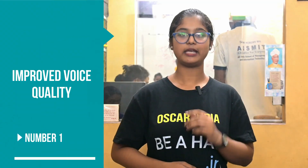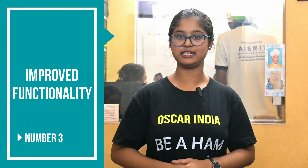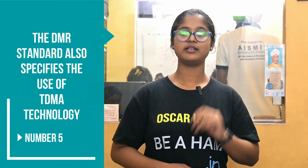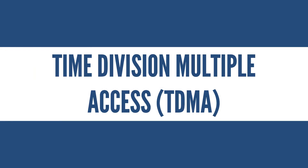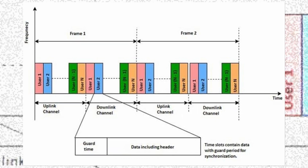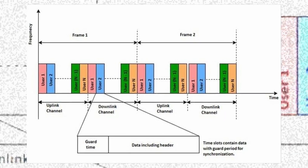What are the features of DMR? The features are: one, improved voice quality; two, improved security; three, improved functionality such as location information; four, each DMR frequency uses a color code; five, the DMR standard specifies the use of TDMA technology. TDMA stands for Time Division Multiple Access — a channel access method used for medium shared networks that allows several users to share the same frequency by breaking the signal into different time slots.